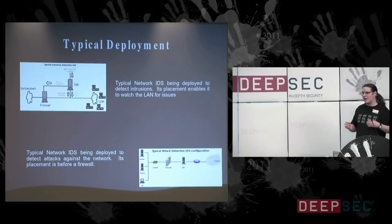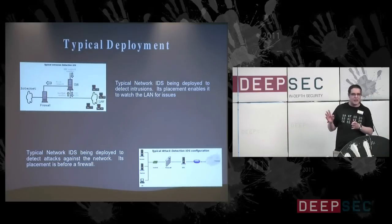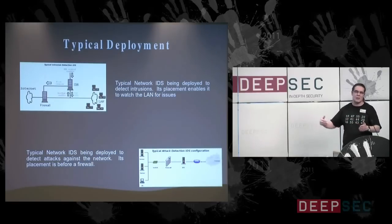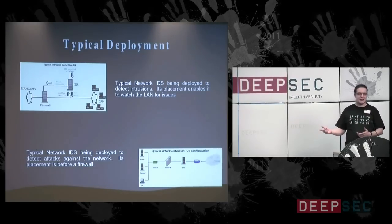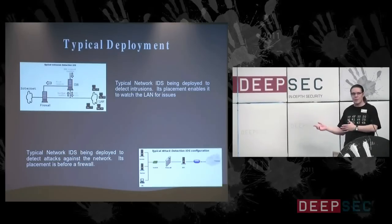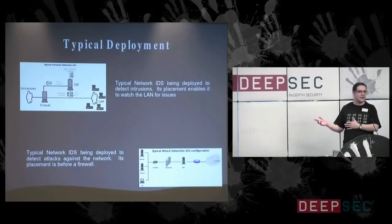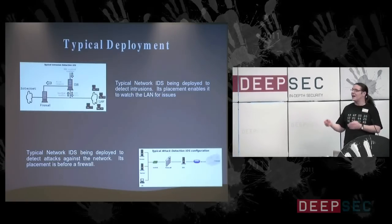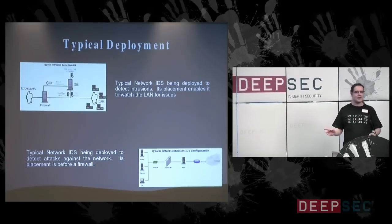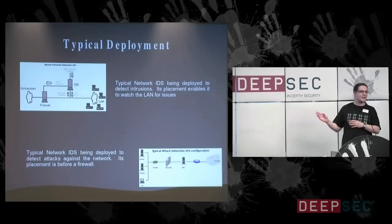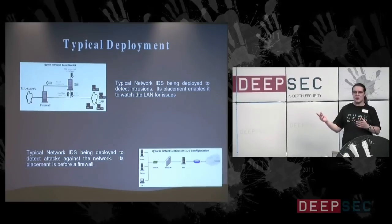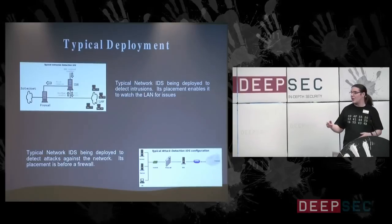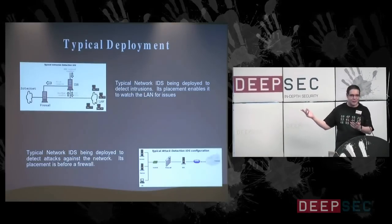We also have an attack detection configuration, where the IDS system normally sits on the DMZ just before the firewall, so we can see threats coming to our network from external sources. An attack detection configuration is really poor at telling us what's happening internally, but really good at telling us what's happening outside — and vice versa. Yet we do see vendors with a one-solution-fits-all approach, claiming to detect and defend both sides of the coin.